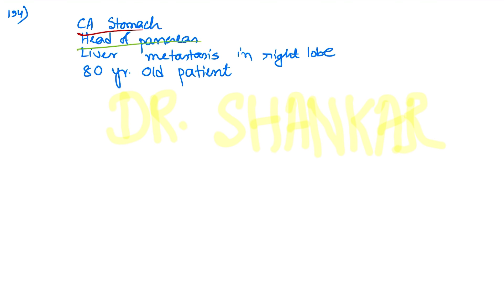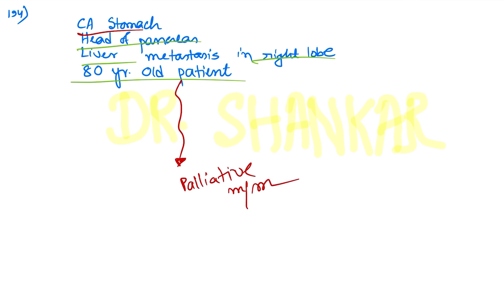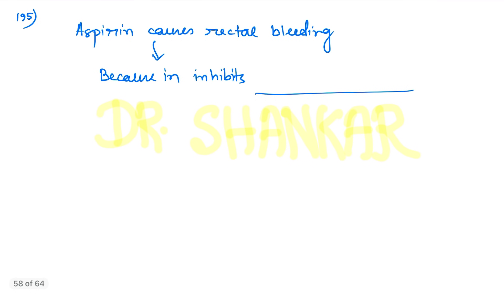Question number 194: a patient with carcinoma of the stomach with spread to the head of the pancreas and metastasis to the right lobe of the liver — this is palliative management. The correct option was palliative management, not radical gastrectomy or chemotherapy.